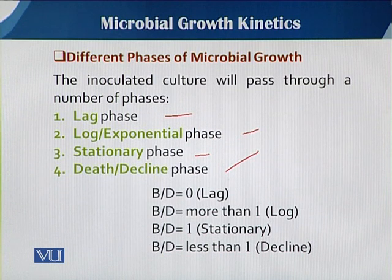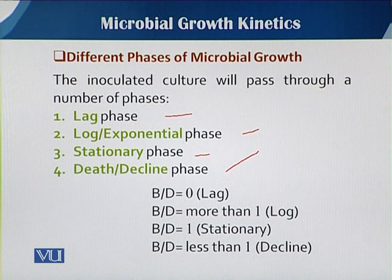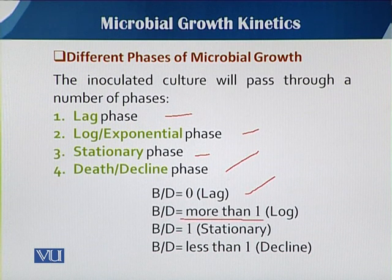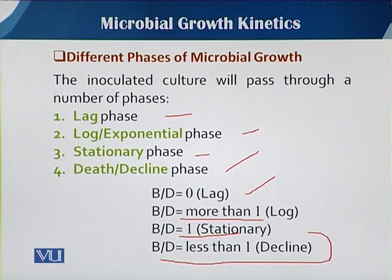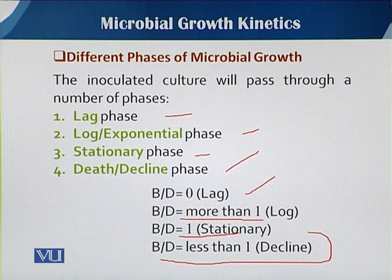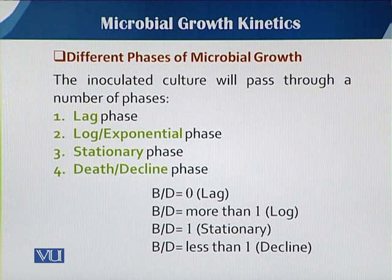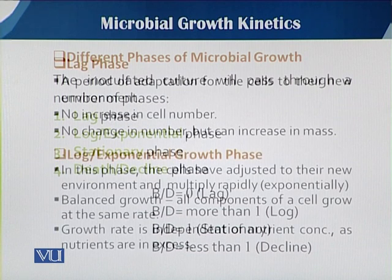The growth is the ratio between birth (B) and death (D). When this ratio is 0, we call it the lag phase. When it is more than 1, the growth is in log or exponential phase. When this ratio becomes 1, it is called the stationary phase. When the ratio decreases below 1 — meaning death exceeds birth — that is referred to as the decline phase. In the next slides we will talk about all these phases in detail.